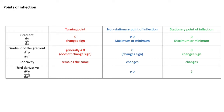The concavity remains the same at a turning point. For a non-stationary point of inflection, the gradient is not zero because it's non-stationary, and dy/dx is at a maximum or minimum. The second derivative is zero and it is changing sign. The concavity changes and the third derivative will be non-zero.